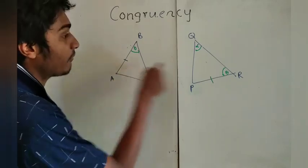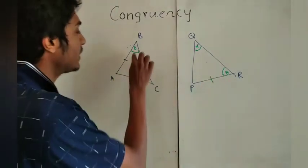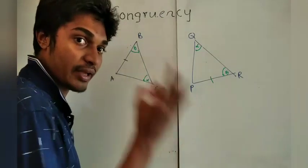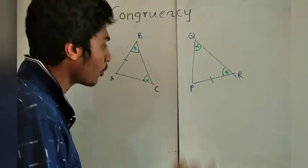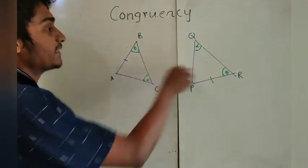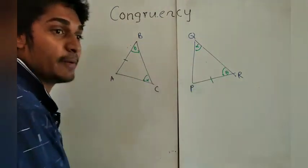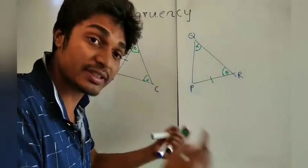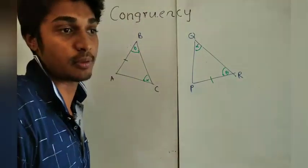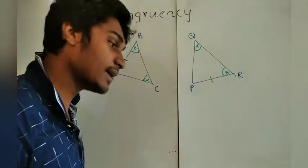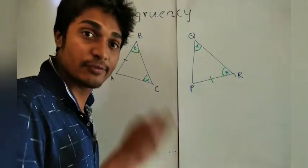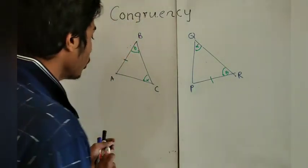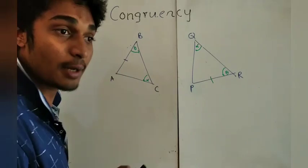The side must be opposite to alpha in both triangles. Theta doesn't matter where it is, but you have to be very careful that these sides are corresponding sides — they should be in the same position. That is very, very important.